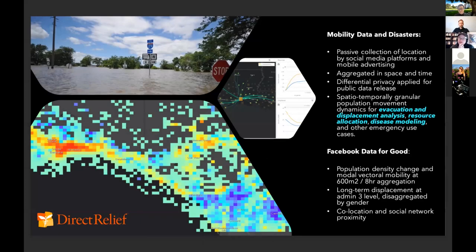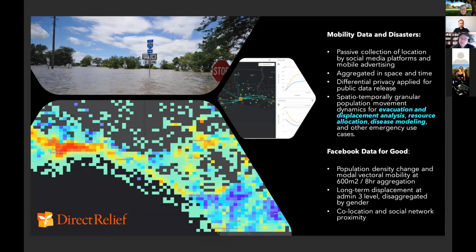I want to talk about the use of mobility data for disaster response. This is a field of work that started at Direct Relief in December 2017. You may remember the Thomas Fire in Santa Barbara, which was at the time the largest fire to hit California — since superseded many times by other fires. Direct Relief, in part because of our local role, was playing a fairly outsized role in distributing N95 particulate masks to help protect people from wildfire smoke.